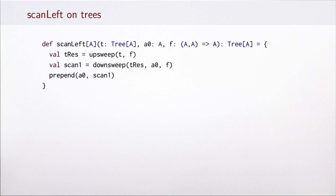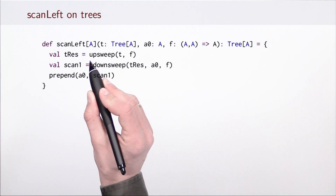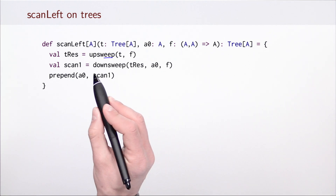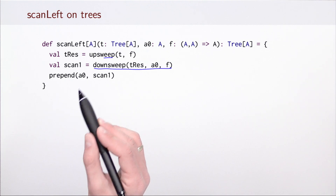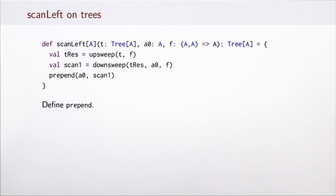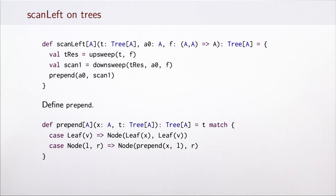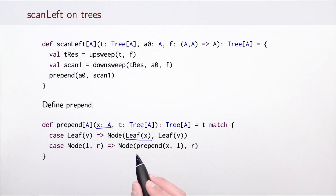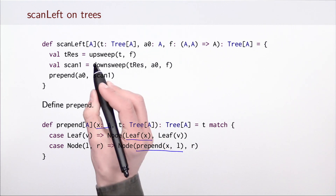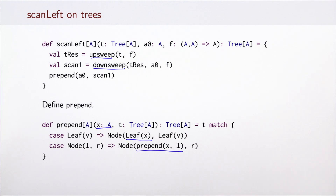This is the implementation of scan left on trees. We compute the tree of results using upsweep, then run downsweep which produces the tree missing the initial element, so all we need to do is prepend that initial element. Prepend is just an operation on a binary tree: for a leaf, we create a node containing a new leaf with the prepended element; for a node, we prepend only in the left subtree, leaving the right subtree as it was. Because upsweep and downsweep are parallel, and prepend is a logarithmic operation on a balanced tree, we achieve good parallel running time.